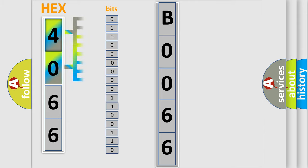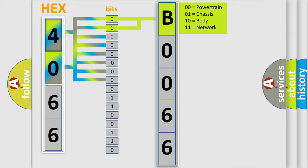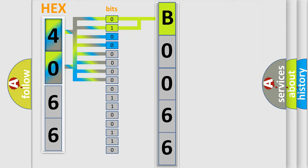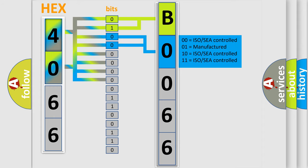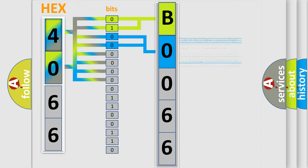The bit has two logical states: zero, the low level, and one, the high level. By combining the first two bits, the basic character of the error code is expressed. The next two bits determine the second character, and the last bits of the first byte define the third character of the code.